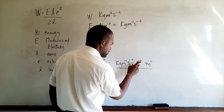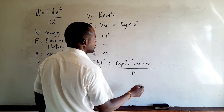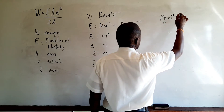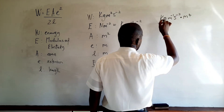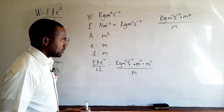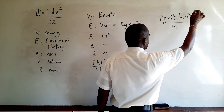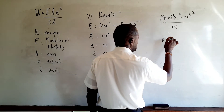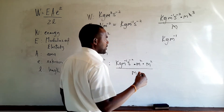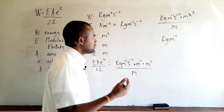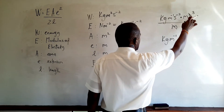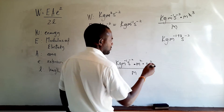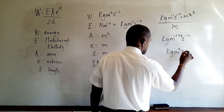For E (modulus of elasticity) we have kilogram per meter per second squared. We multiply by the units of area, meter squared, and by the units of e squared, also meter squared. Meter squared times meter squared gives meter to the fourth power. We then divide by the units of L, which is meter. This gives kilogram times meter to the fourth, divided by meter and per second squared. Meter divides into meter to the fourth to give meter cubed. In the numerator we have kilogram times meter to the minus one times meter cubed.